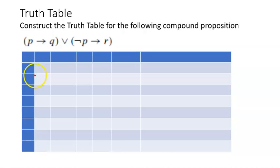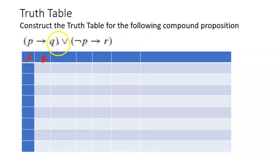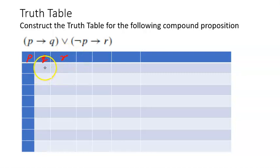To start with, this was a problem I wanted you to complete from the last video. Let us do this here. We have three variables P, Q and R. Since we have three variables, there will be eight rows in the truth table. Let us write the values that this combination of P, Q and R will take.